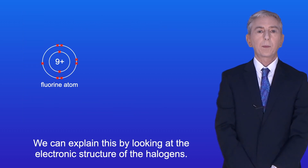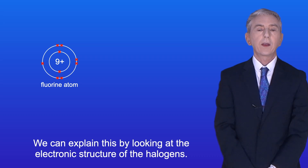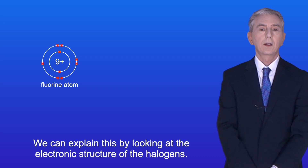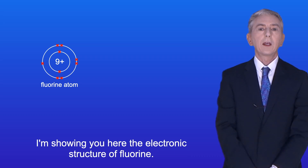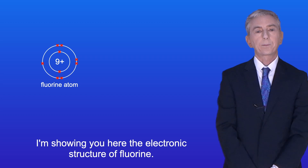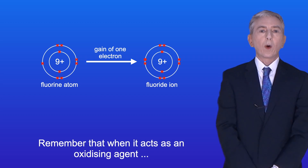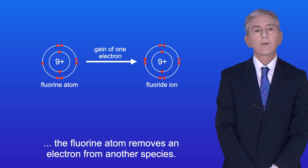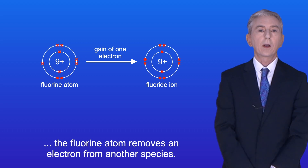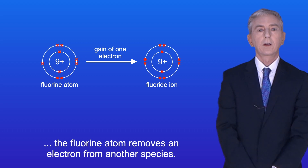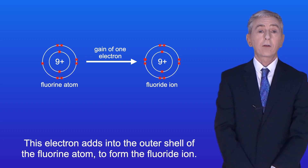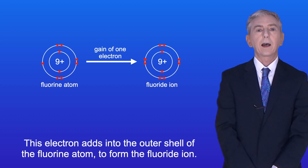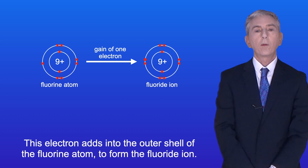Now we can explain this by looking at the electronic structure of the halogens. I'm showing you here the electronic structure of fluorine. Remember that when it acts as an oxidizing agent, the fluorine atom removes an electron from another species. This electron adds into the outer shell of the fluorine atom to form the fluoride ion.